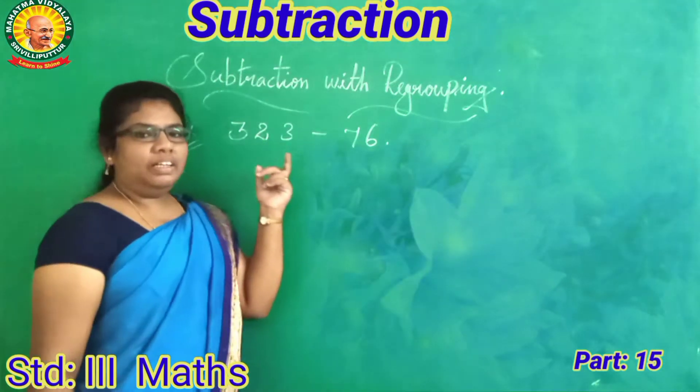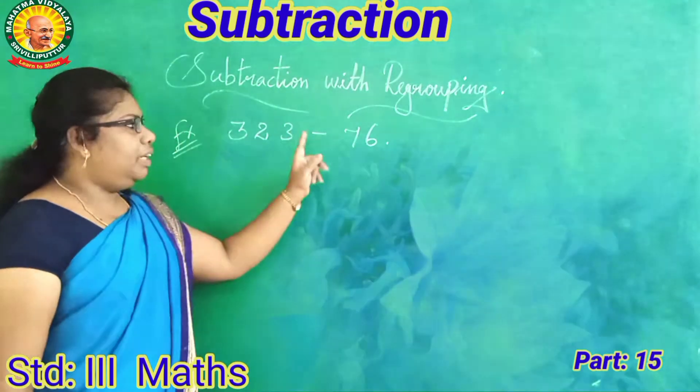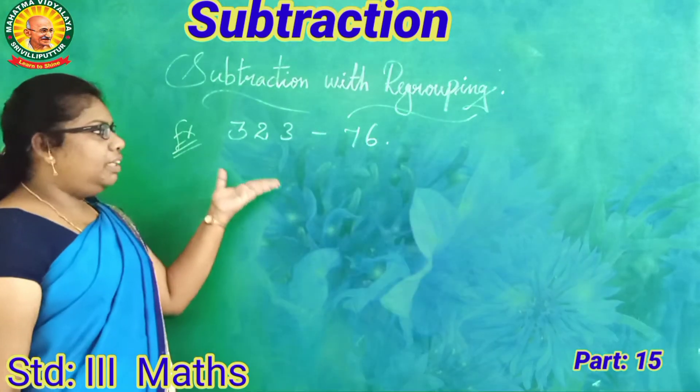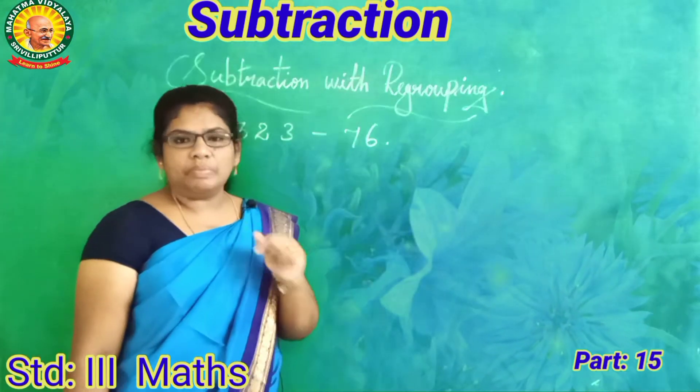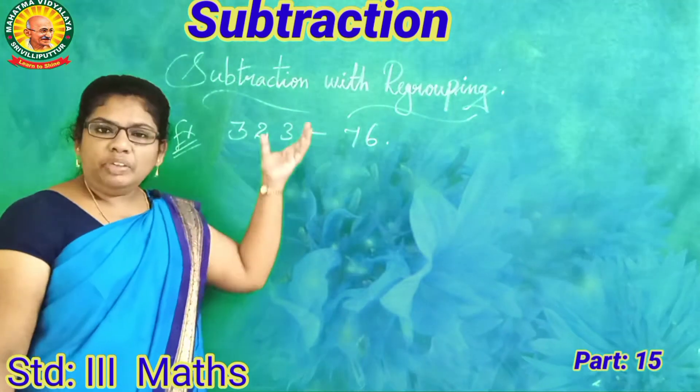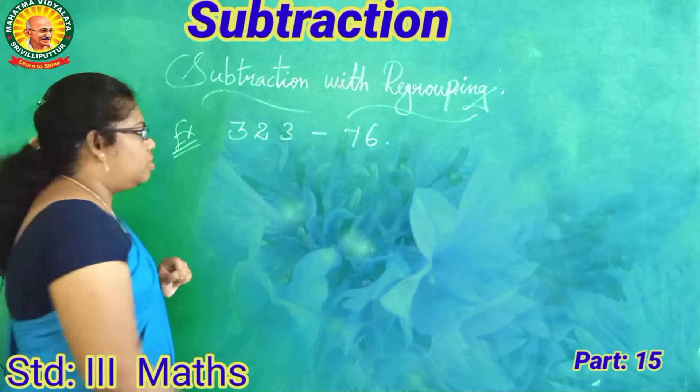Look at here. 323 minus 76. For that, first we have to write the numbers in column form.